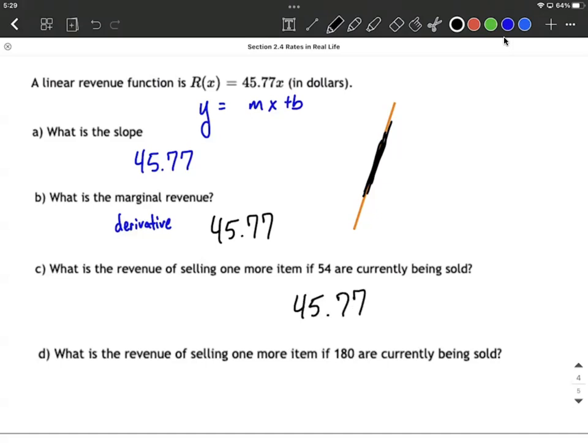What's the revenue of selling one more item if 180 are currently being sold? That 181st is going to be consistent, right? This is linear, so it's also going to be 45.77.